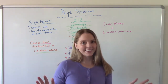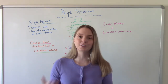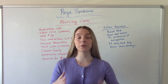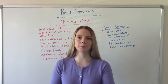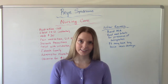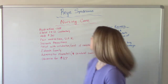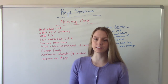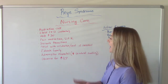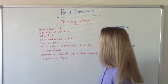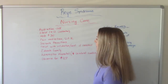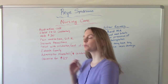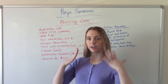Now let's talk about nursing care for these children. It's going to vary and be very individualized depending on how severe the child has it. Some potential nursing interventions include maintaining good hydration — the child will probably be on IV fluids — strict intake and output monitoring, and possibly a catheter. We want to keep the head of the bed elevated 30 degrees and avoid repositioning them too much, keeping them neutral and safe.